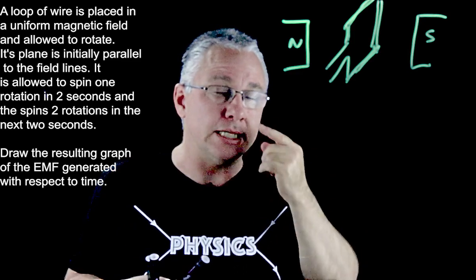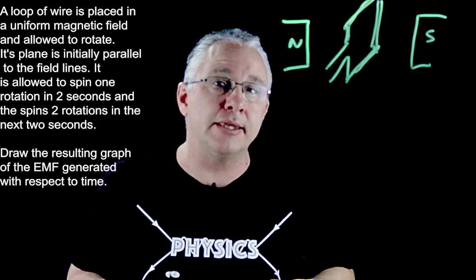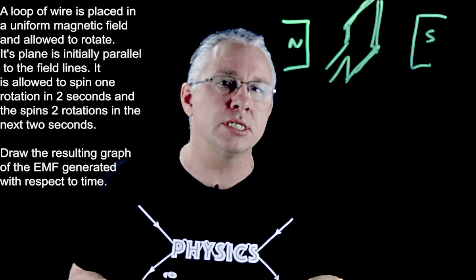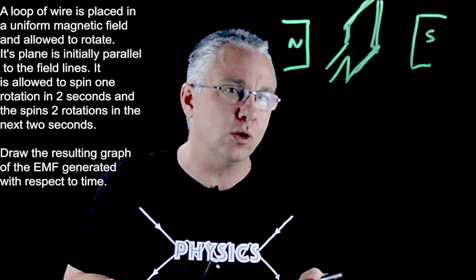So this loop of wire is going to rotate. It's going to make one complete revolution in two seconds and then it's going to make two revolutions in the following two seconds and we're wanting to know what the graph looks like.